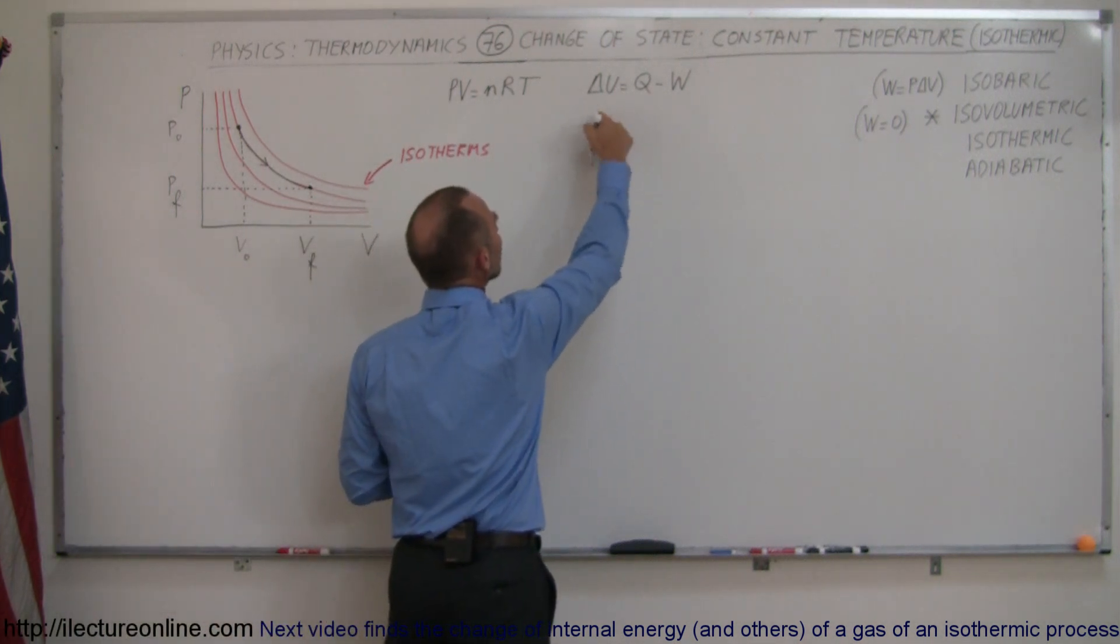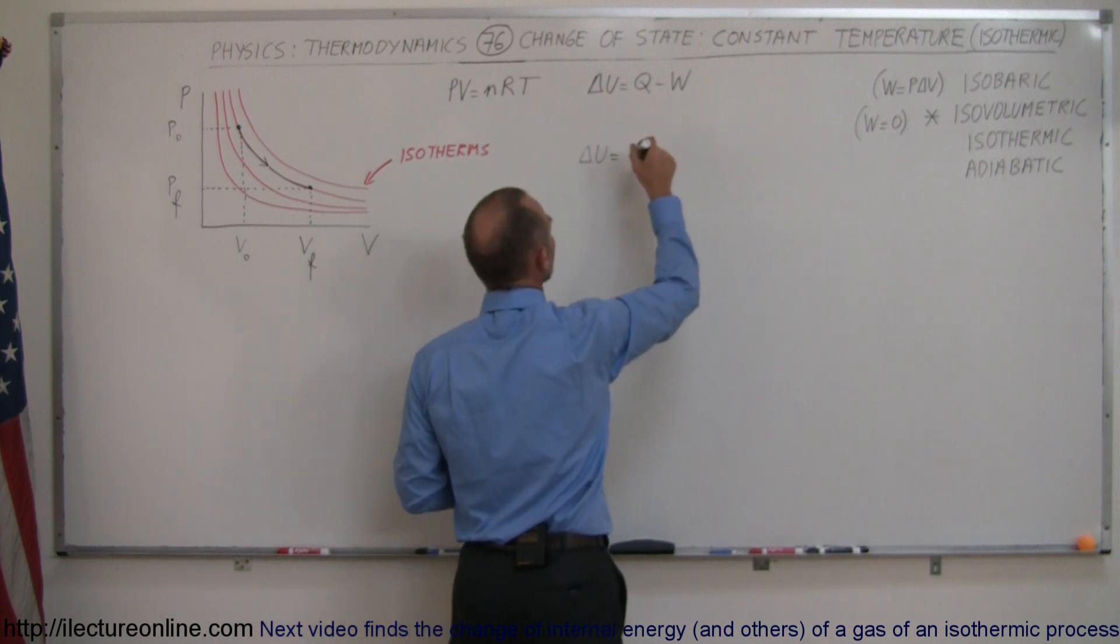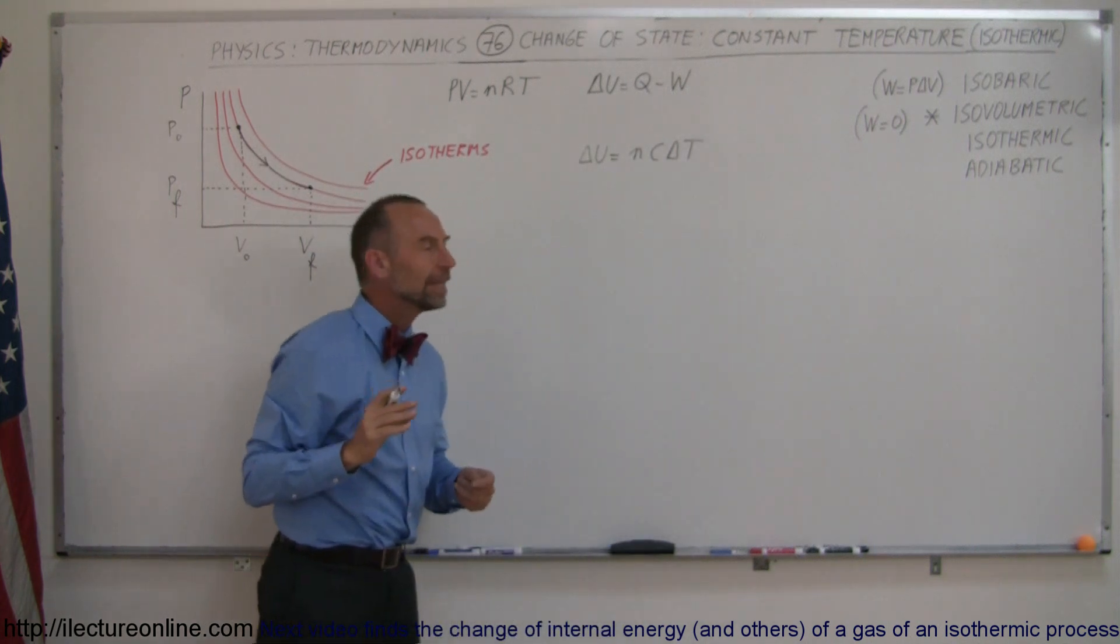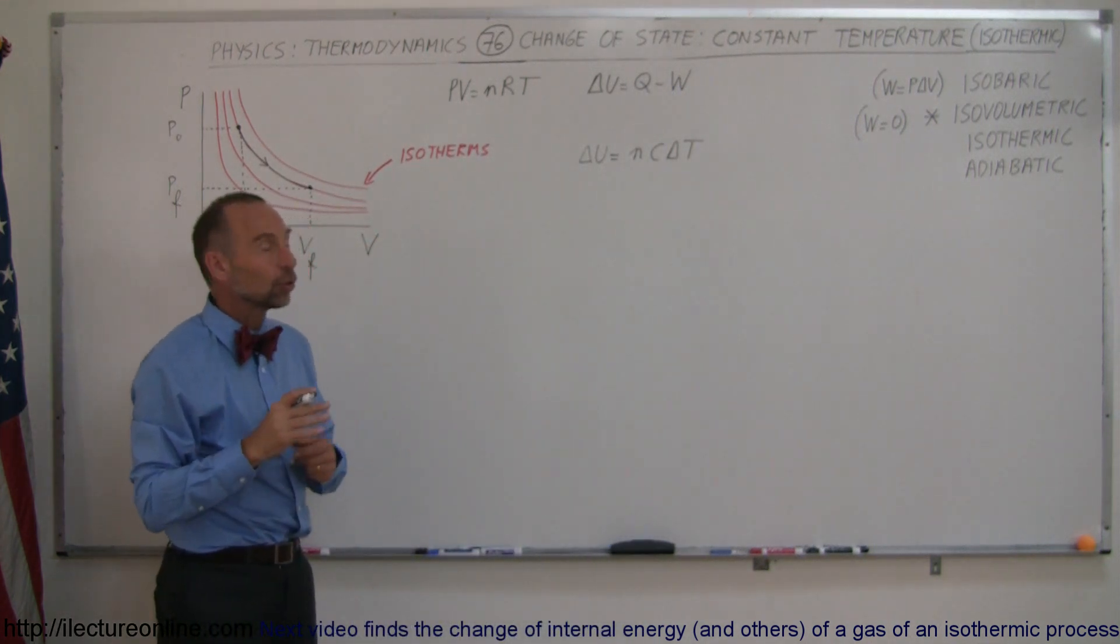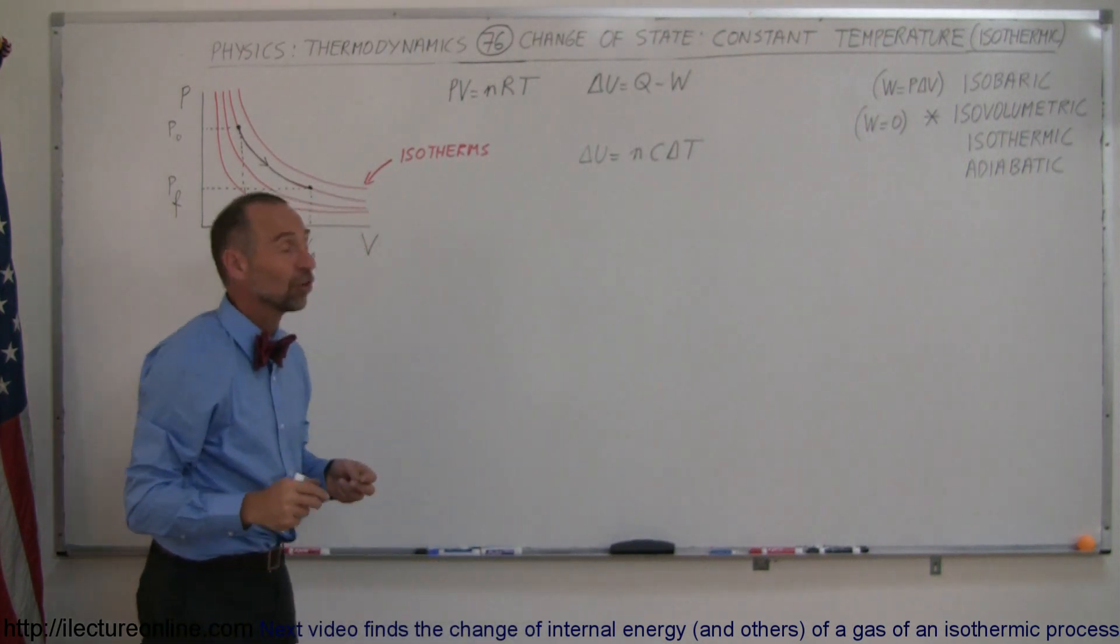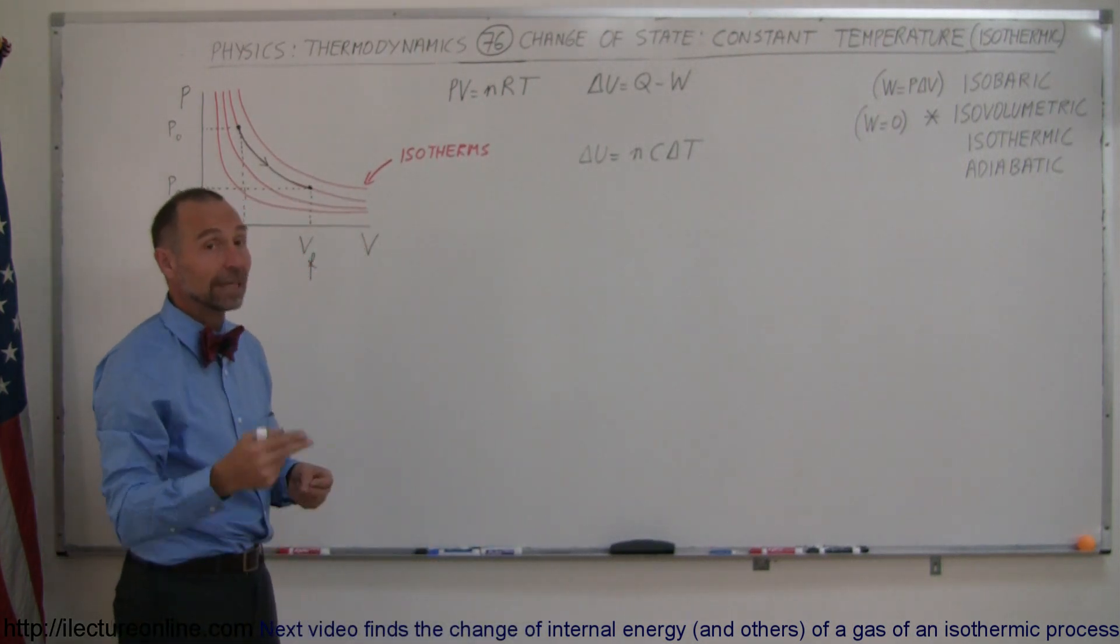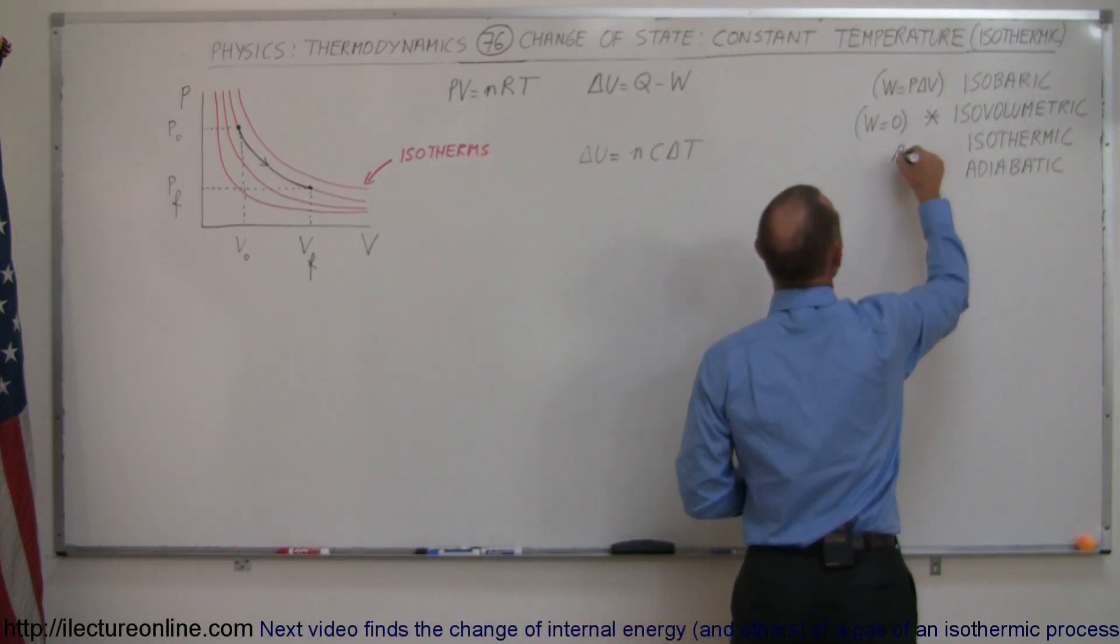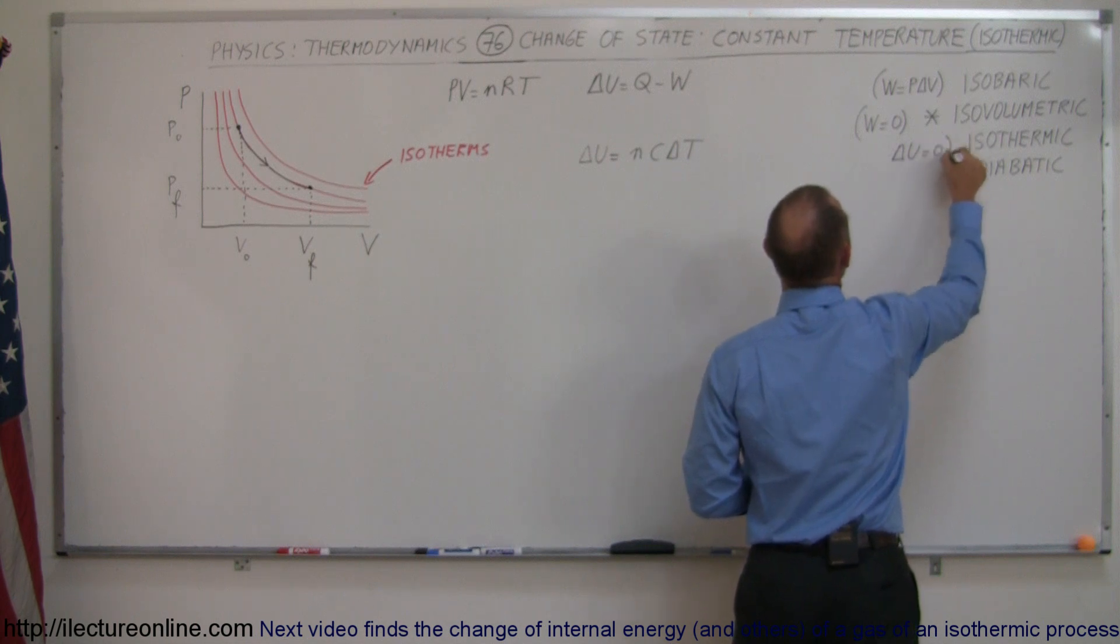Remember what the definition is of delta U. Delta U is equal to Nc delta T. The internal energy of the gas can only change if the temperature changes. So if the temperature does not change, then the internal energy of the gas cannot change, which means in an isothermic process, delta U must equal zero.